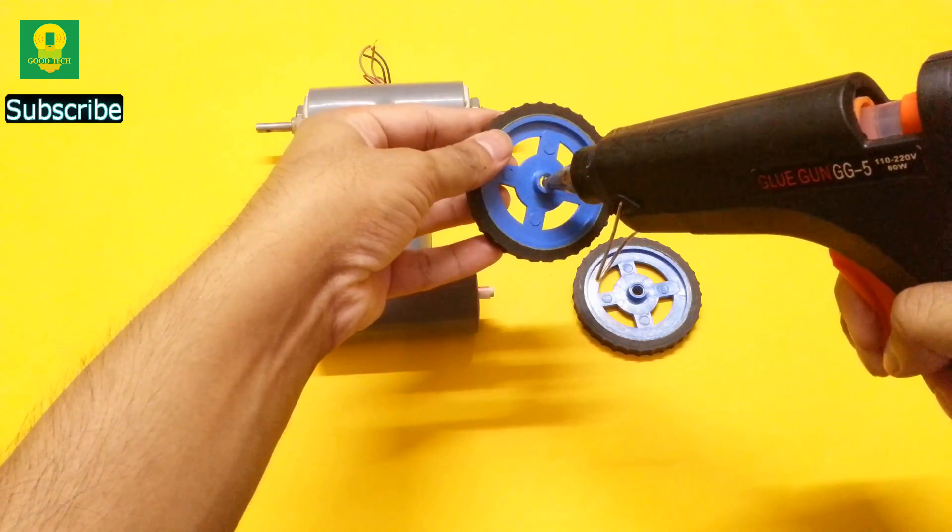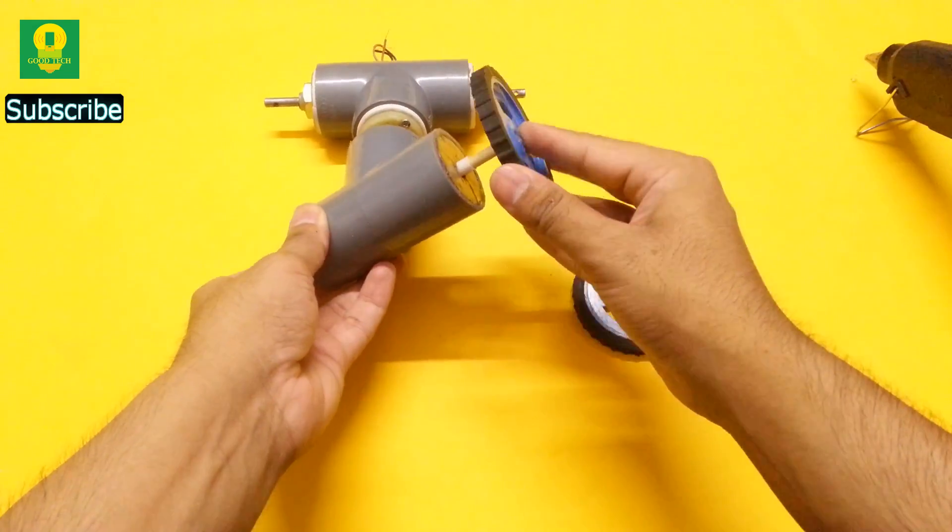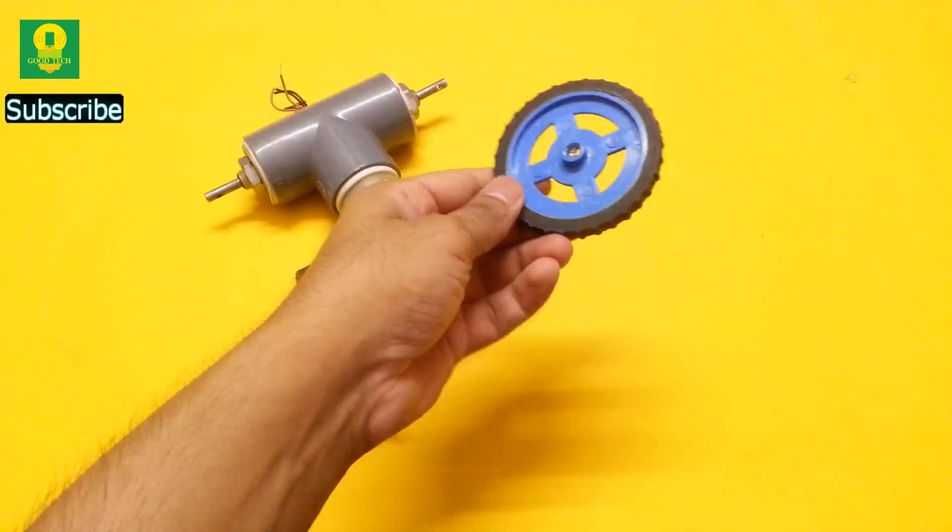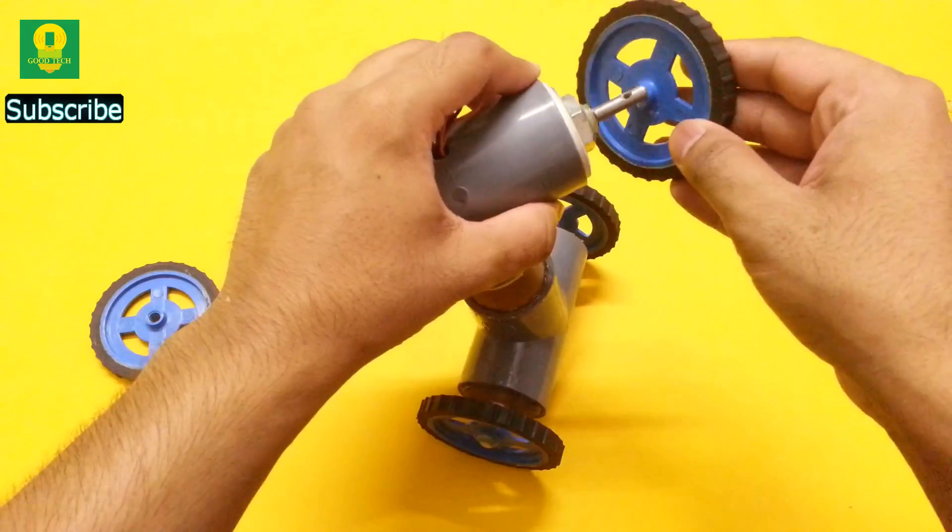Using hot glue, attach the wheels on both the sides of the wooden stick. Also attach the wheels to the motor shafts.